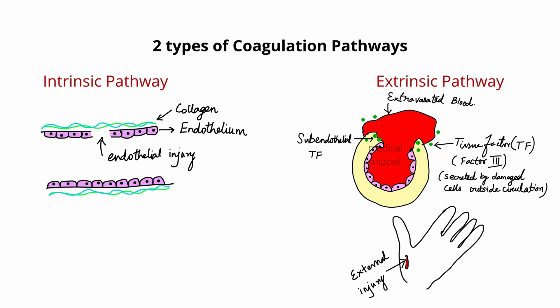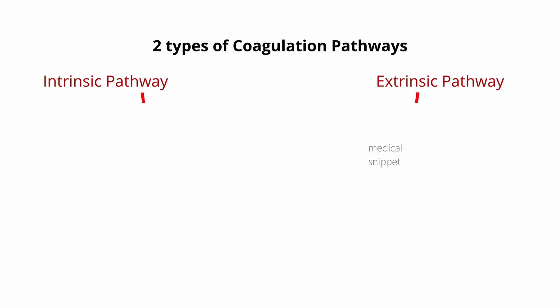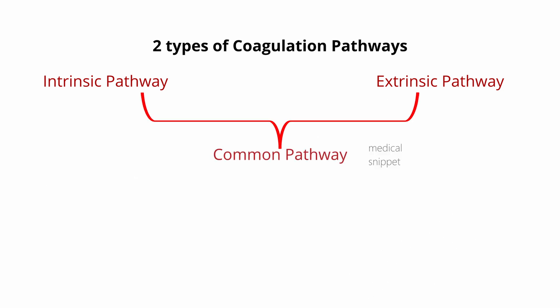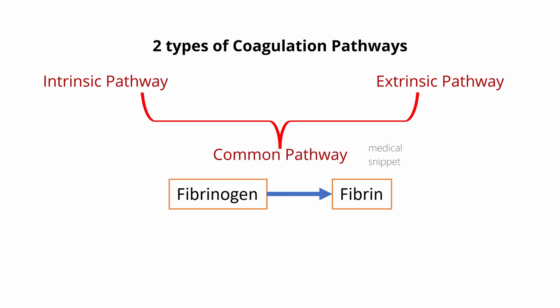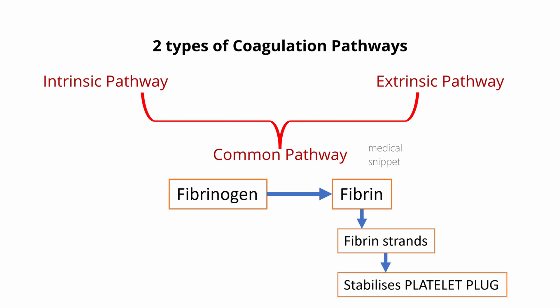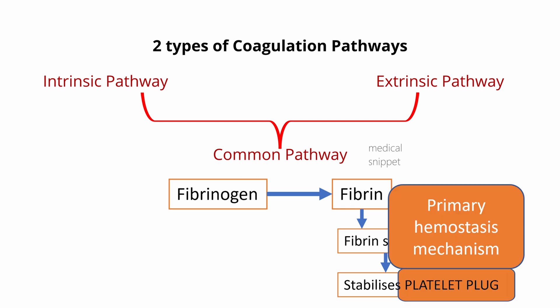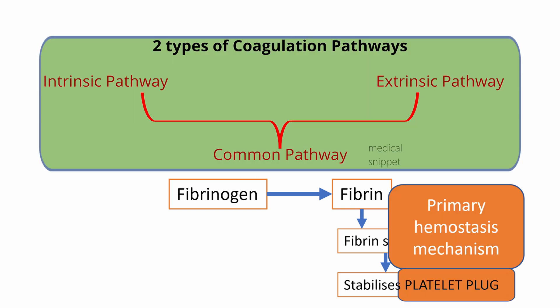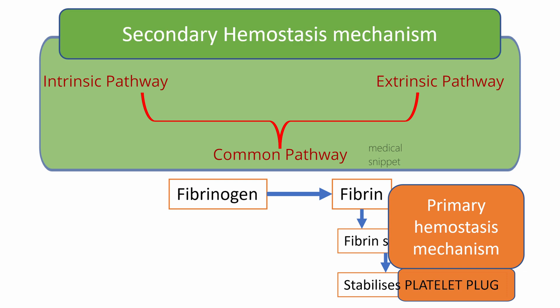Though these are two separate pathways, they merge at a point to form the common pathway. The common pathway finally activates fibrinogen into fibrin. These fibrins form fibrin strands that bind the platelet plug and stabilize it. It should be noted that the formation of platelet plug is the primary hemostasis mechanism, and the two coagulation pathways are the secondary hemostasis mechanism.